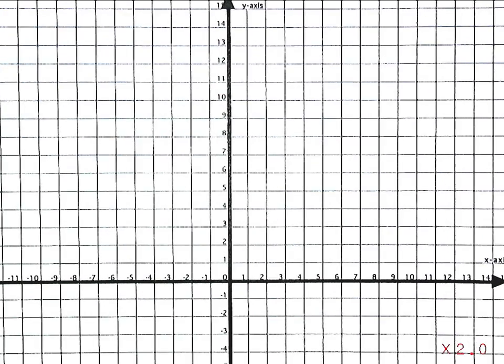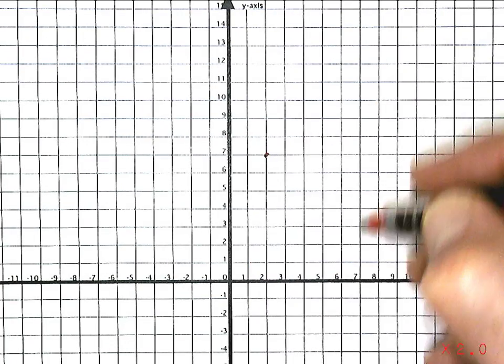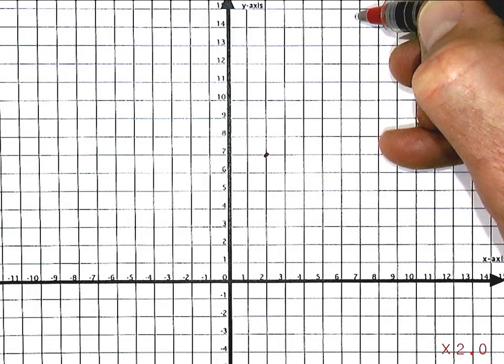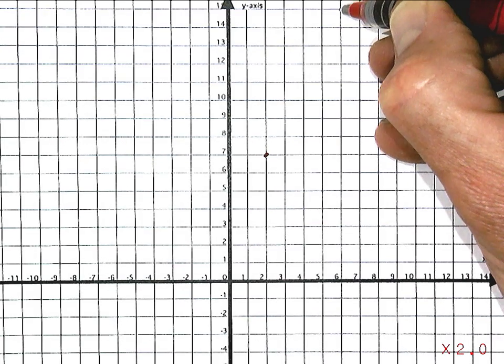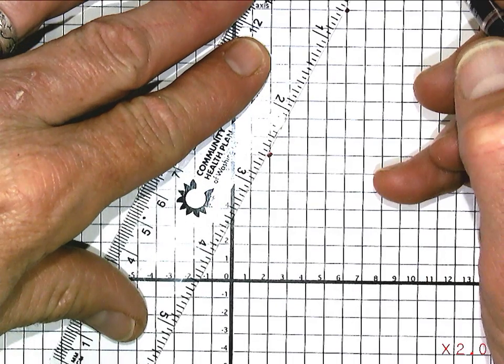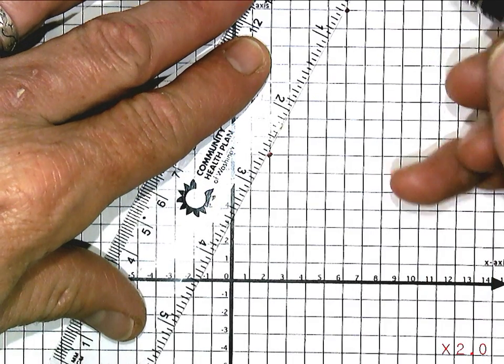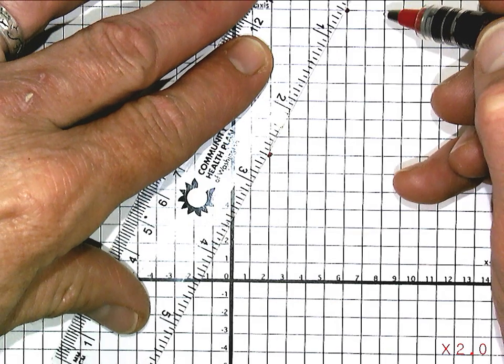So on my grid paper, (2, 7) and (6, 15), way up at the top of my graph, way up here. So I already have those two points, and if I connect the dots and just keep them going, see where they take things.